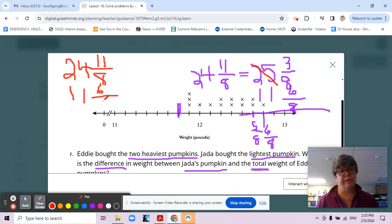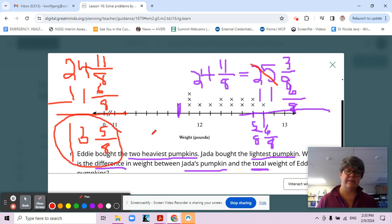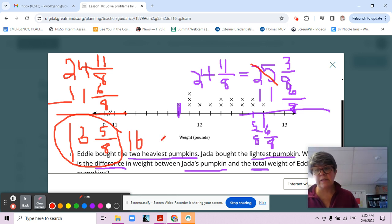24 and 11 eighths minus 11 and six eighths. There we go. 11 minus six is five eighths, and 24 minus 11: four minus one is three, two minus one is one. So 13 and five eighths.